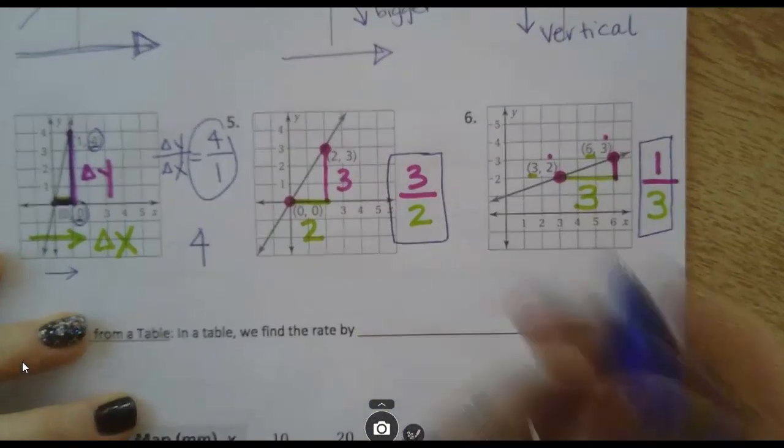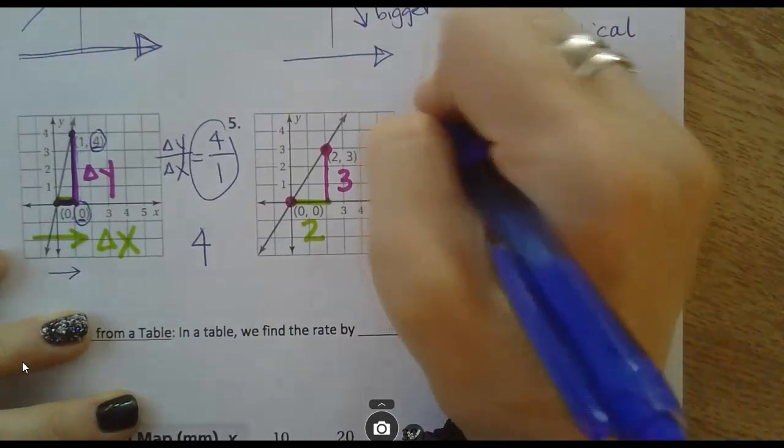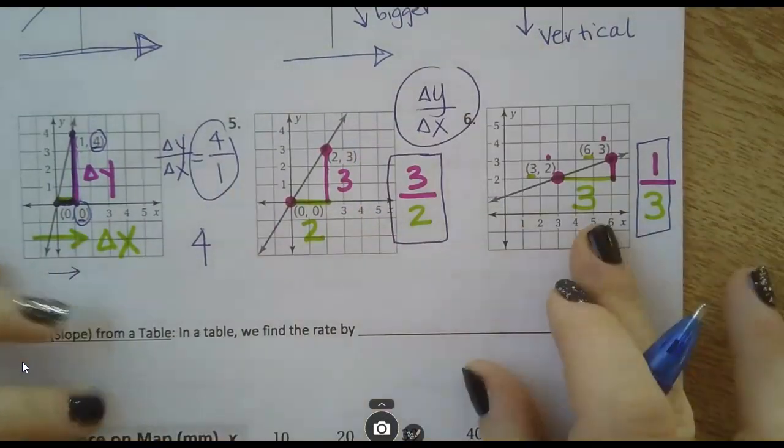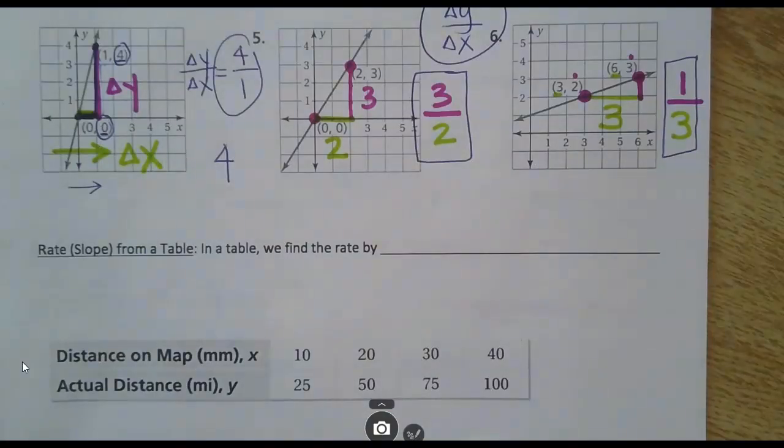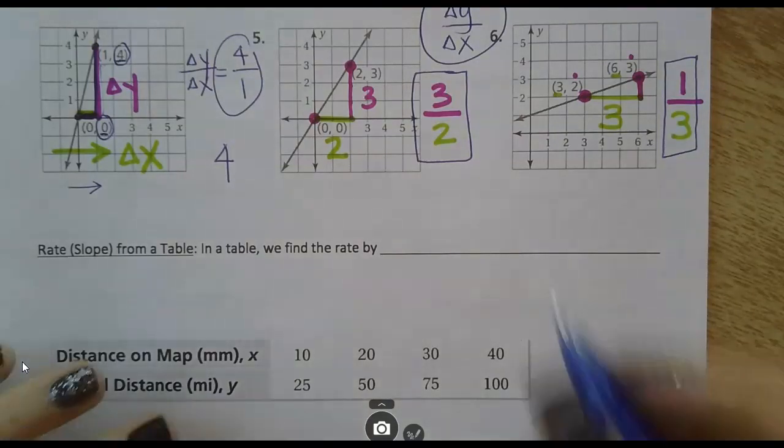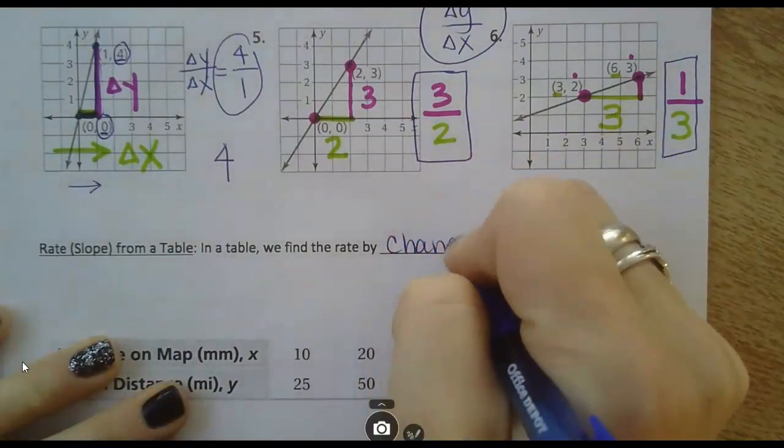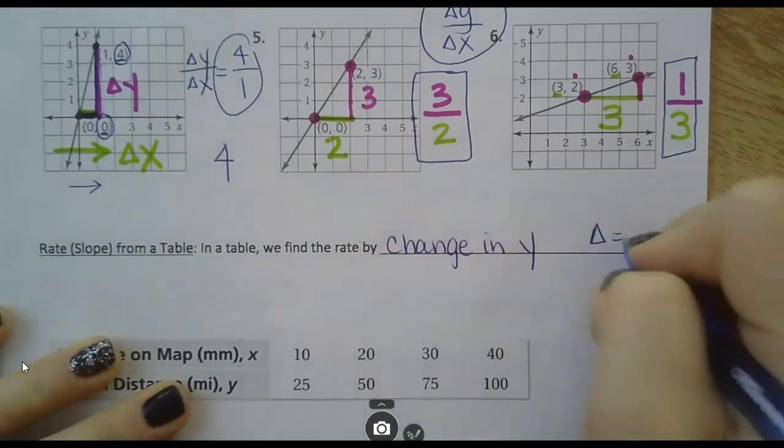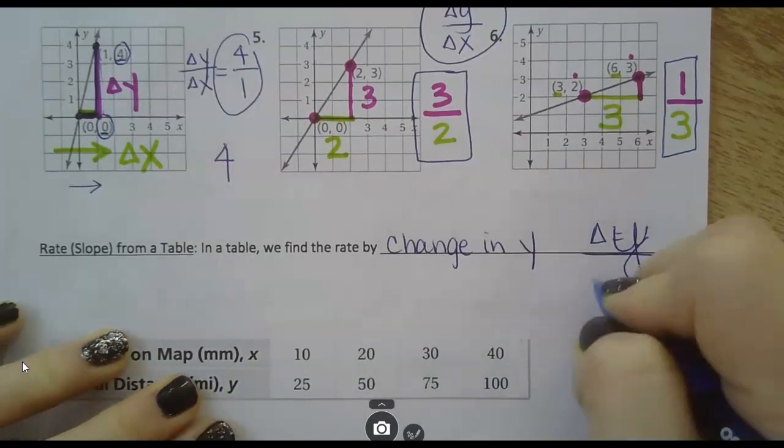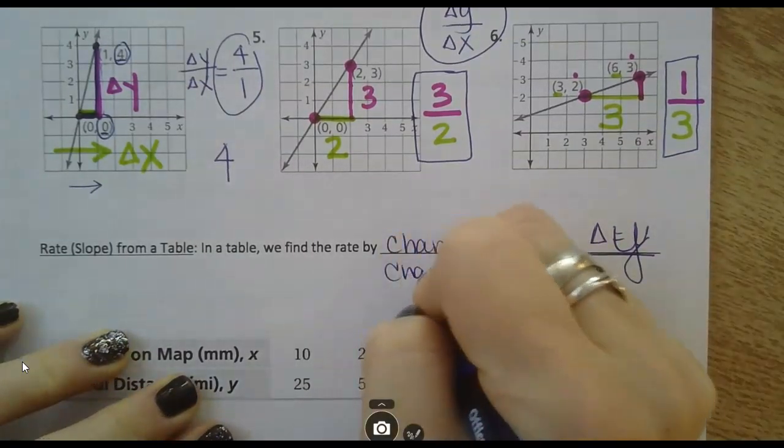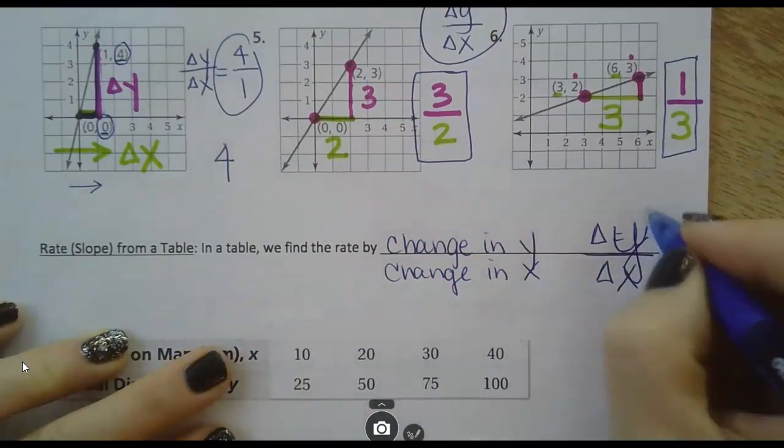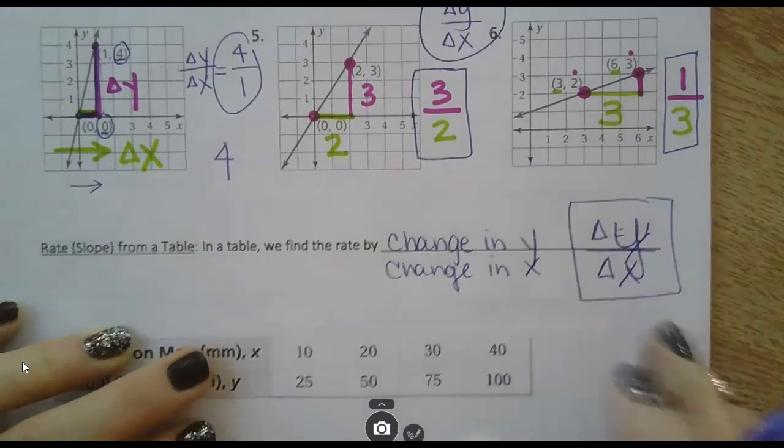The slope is always just change in y over change in x. That's what I did on all these graphs to find the slope. To find the rate or the slope from a table, still change in y, or that triangle delta y, over change in x, delta x. Change in y over change in x.